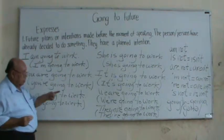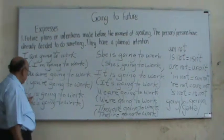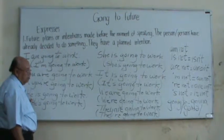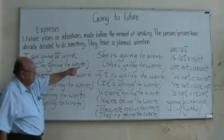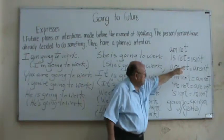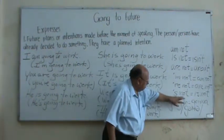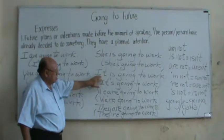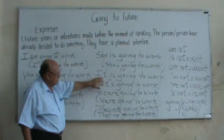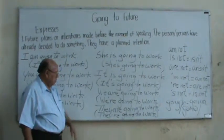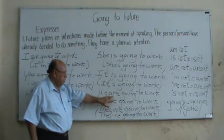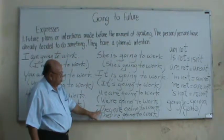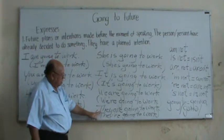From 'you' up to 'they' we can use three forms: He is not going to work / He isn't going to work / He's not going to work. She is not going to work / She isn't going to work / She's not going to work. It is not going to work / It isn't going to work / It's not going to work. We are not going to work / We aren't going to work. They are not going to work / They aren't going to work.